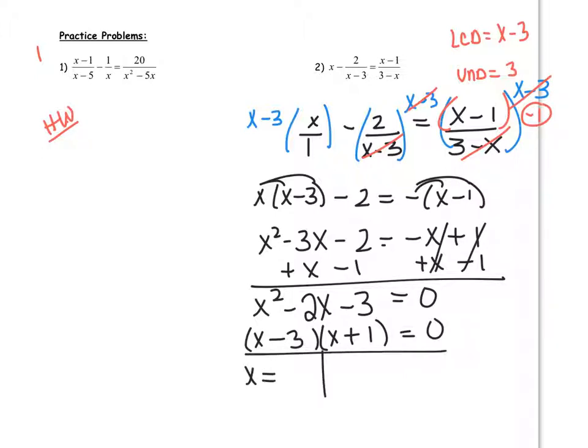x minus 3 and x plus 1. And we get x is equal to positive 3. And x is equal to a negative 1. But remember, x is undefined when x equals 3. So we have to reject this one. And x equals negative 1 is the answer. So what I'd like you to do now is try number 1 here. And we'll go over that one in class tomorrow. All right, have a good night.